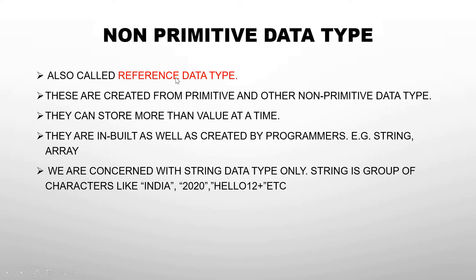The second type is non-primitive data type, also known as reference data type. These are created from primitive and other non-primitive data types. For example, String is a non-primitive type — it is a group of characters, and character is a primitive type. So String, a non-primitive data type, is created from the primitive character type.